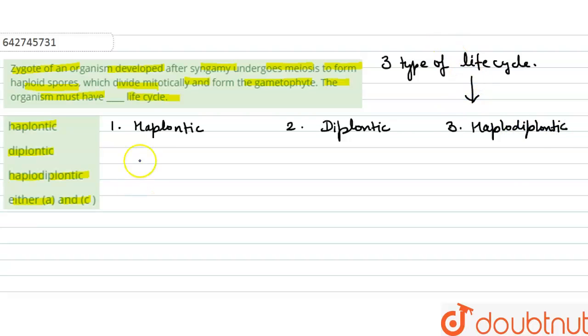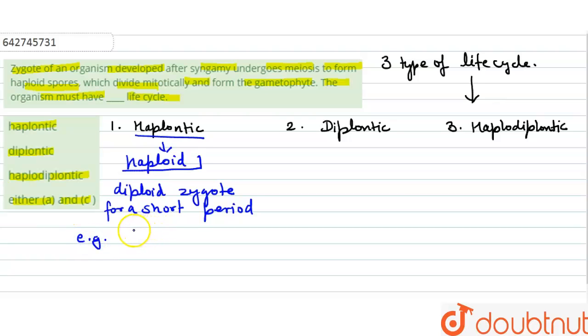In the haplontic life cycle, the main form is haploid, and the diploid zygote is formed for a short period of time. This is the main form, the haploid form. Examples of haplontic life cycle are present in volvox, spirogyra, and chlamidomonas.